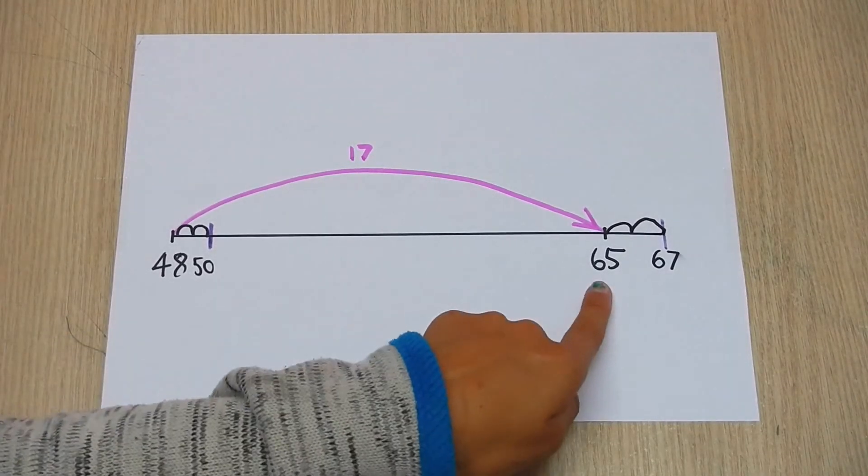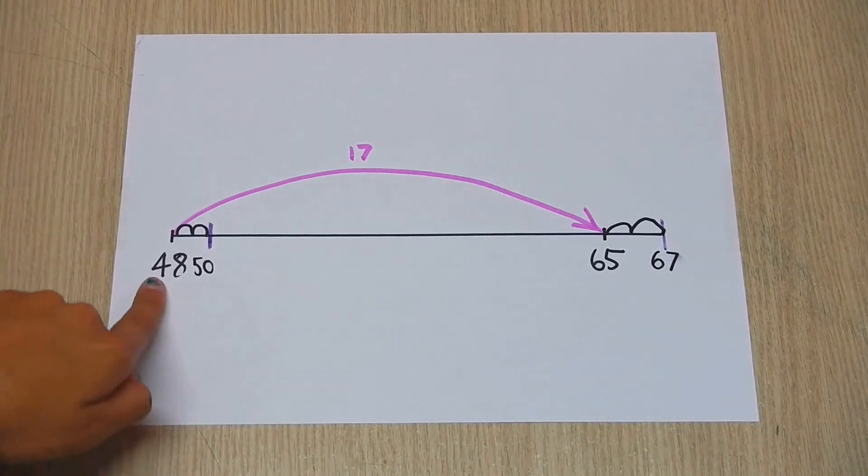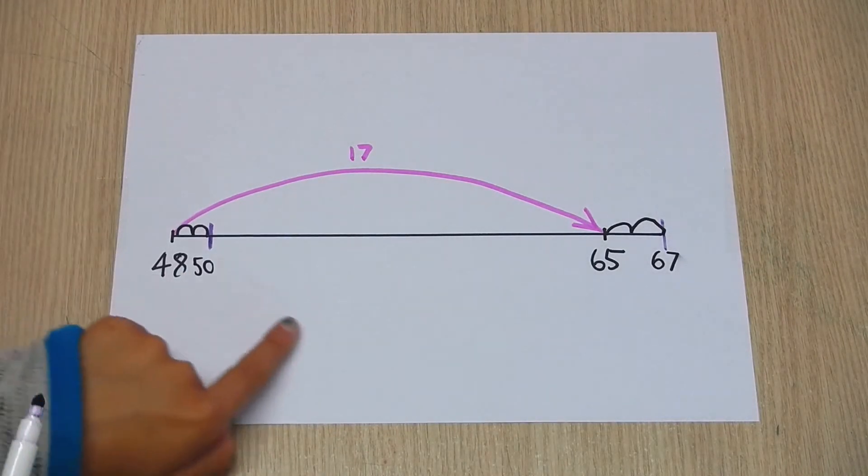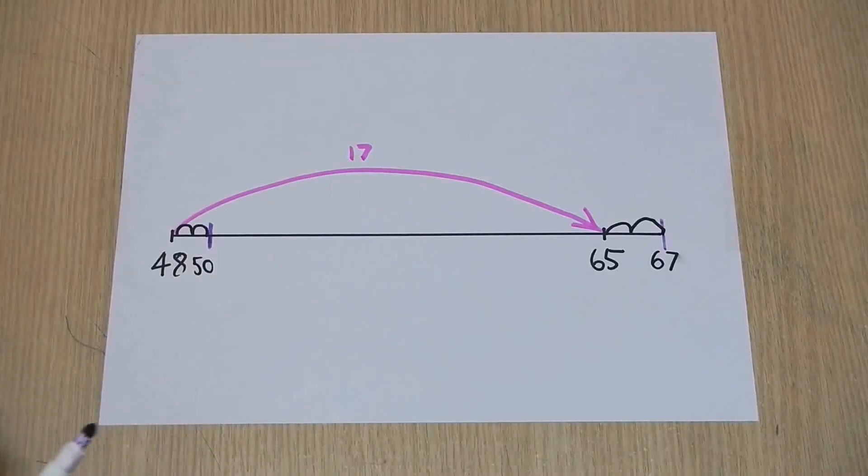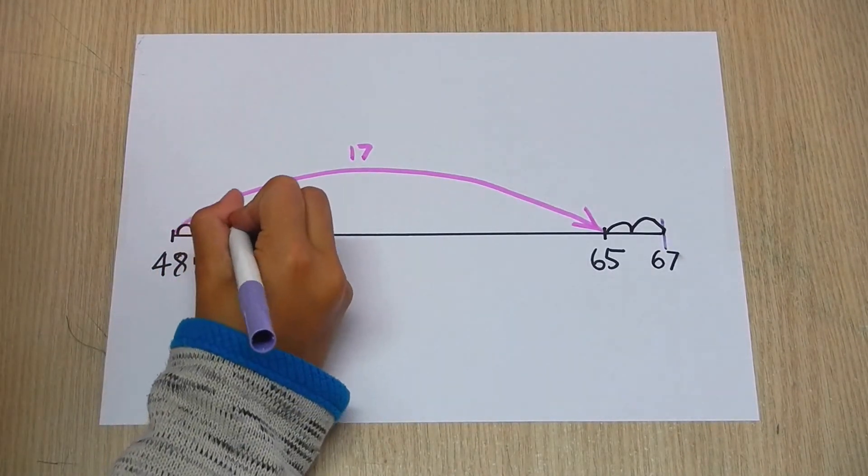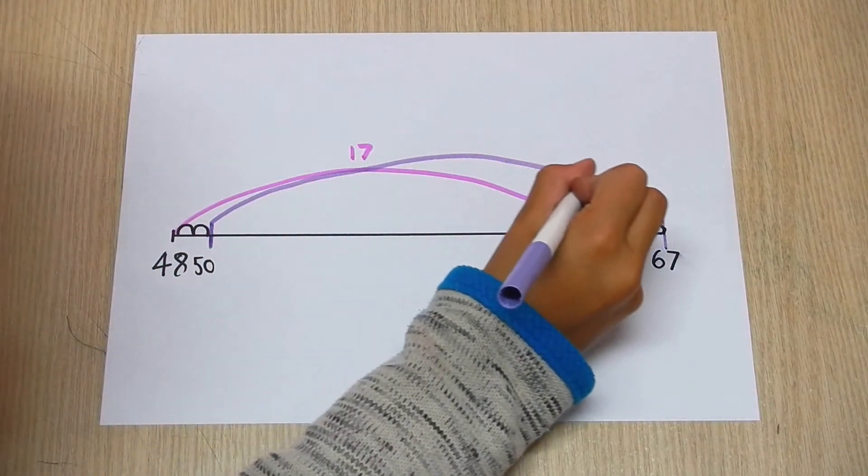Take 65 minus 48. Put the 48 at the start and 65 at the end. If you jump 2 from each number, you'll see that the difference is the same. 17.